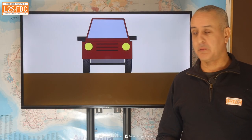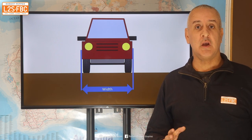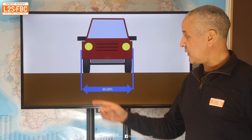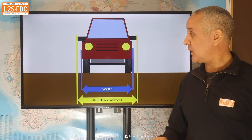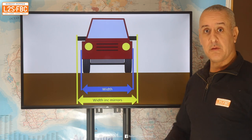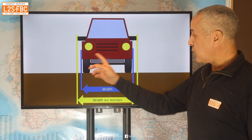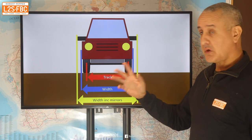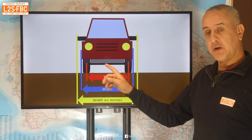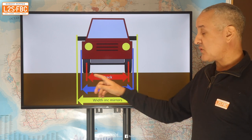Let's talk about width and offset, starting with width and some common dimensions. The first one is the width of a car, measured at the widest part of the body, which is typically the wheel arches. But you might say, what about the wing mirrors? Well, there's another width called width including mirrors, which is obviously going to be wider than the width of the body. The track is something different — you can think of it as the distance between the centre line of each tyre.